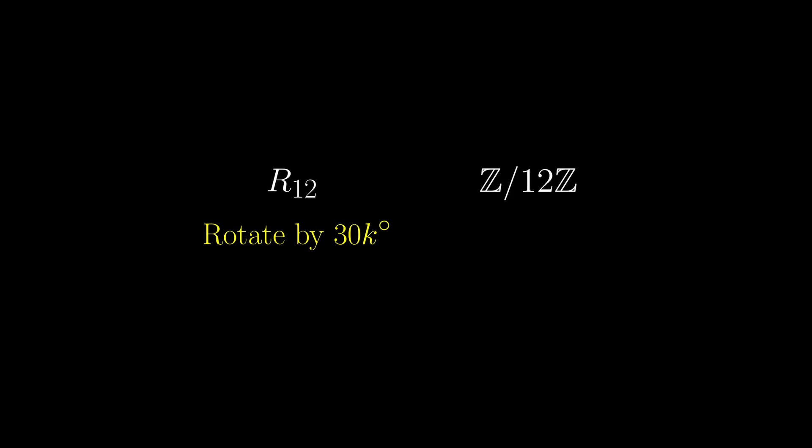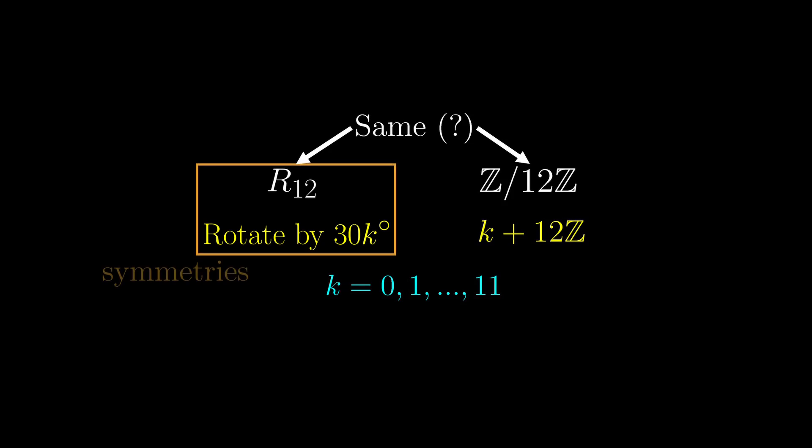and on the other hand we have Z mod 12Z, which is a group of cosets of 12Z written this way. It's tempting to say that these two groups are the same, but R12 is fundamentally a group consisting of rotational symmetries of the dodecagon, while Z mod 12Z is fundamentally a group consisting of cosets which themselves contain translational symmetries of the number line.